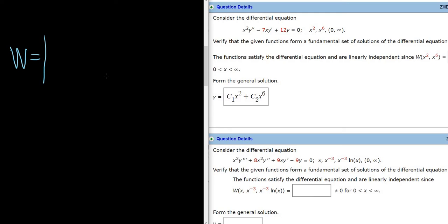So to find the Wronskian, we write down this determinant like this. And in the first row, we write down our functions. In the second row, we have to write down the derivatives of our functions. So the derivative of x squared is 2x. And the derivative of x to the 6 is 6x to the fifth.